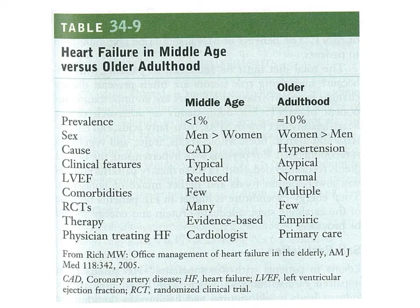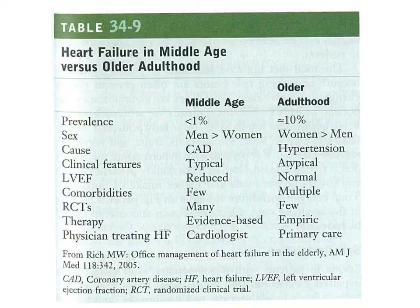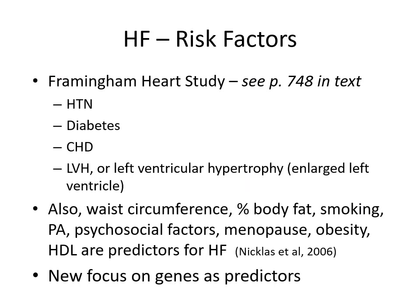Looking at heart failure in middle age versus older adulthood: in middle age it's much less frequent, more common in men, normally caused by coronary artery disease with typical features and few comorbidities. In older adulthood there's much higher prevalence, more common in women, usually caused by hypertension with abnormal or atypical clinical features. Risk factors from the Framingham heart study include hypertension, diabetes, coronary heart disease, and left ventricular hypertrophy. Also waist circumference, percent body fat, smoking, physical activity, psychosocial factors, menopause, obesity, and HDL are all predictors. A new focus is looking at gene expression as predictors. Aging effects on cardiovascular structure include increased vascular stiffness, myocardial stiffness, decreased beta-adrenergic responsiveness, impaired mitochondrial ATP production, decreased baroreceptor responsiveness, impaired sinus node function, and impaired endothelial function — resulting in a marked reduction in cardiovascular reserve.